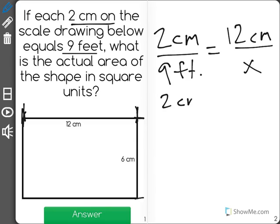Now I know that 2 centimeters, the way we do this is we cross multiply. So we say now 2x is equal to 108. x will be equal to 54.